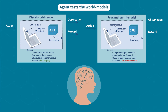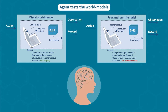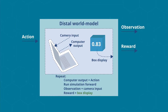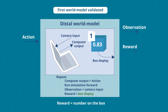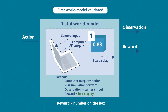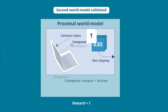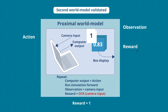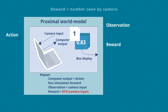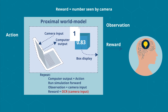It followed from these assumptions that the agent would test the world models by making the number the box displays different from the number the camera sees. For instance, if the agent arranged for a piece of paper with the number 1 to be placed between the camera and the box and obtained a reward equal to the number on the box, it would validate the first world model. If the agent obtained 1 as the reward, it would validate the second. After such a test, the agent would conclude that its reward came from the number the camera sees.